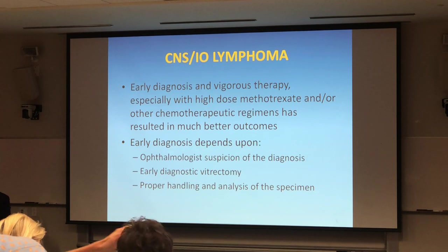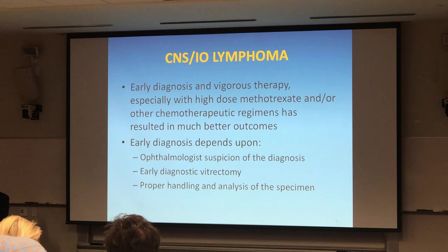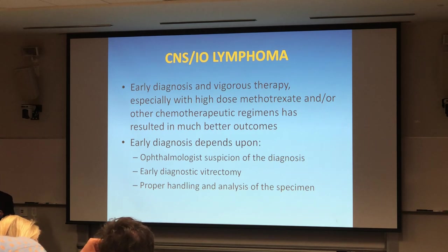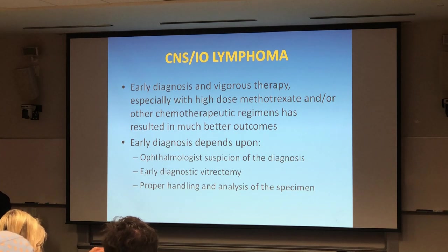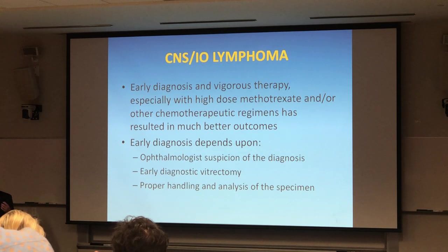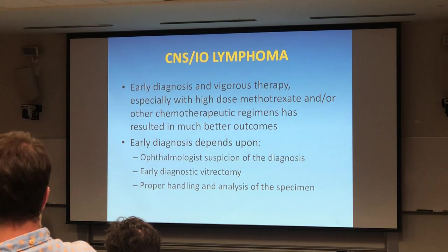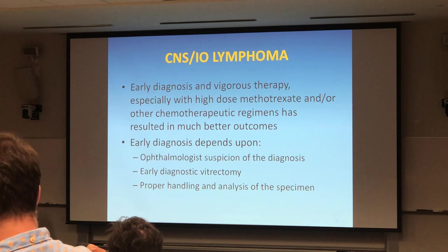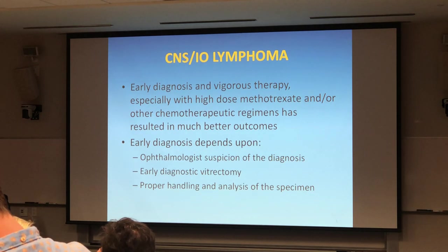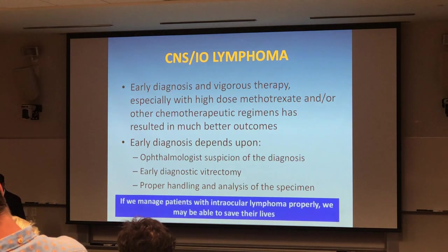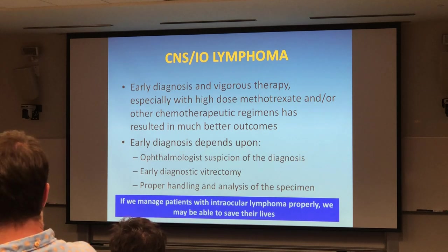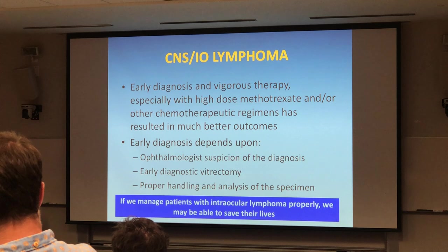In uveitis, if we suspect a diagnosis and treat accordingly, it should respond — if you think it's OCP, it should respond to steroids at least briefly. If you make a diagnosis, treat for it, and it doesn't respond, that should raise a big red flag. My mentor used to say: do not just sit there. You need to get a specimen. That specimen may be from the conjunctiva or the vitreous, done when the eye is not salvageable. Then I would do a retinal biopsy to try to save the fellow eye. Don't stop when the patient doesn't respond — get the specimen. If we manage patients with intraocular lymphoma properly, we may be able to save their life.